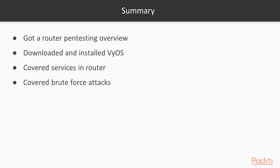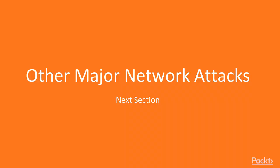For the section summary: we learned about router penetration testing, how to download and install Vios inside a virtual machine, how to assign an IP address, how to start services like SSH and Telnet inside a router, and finally how to perform a brute force attack from Kali Linux. That's all for this section — in the next section we are going to learn about other major network attacks. Thank you so much.